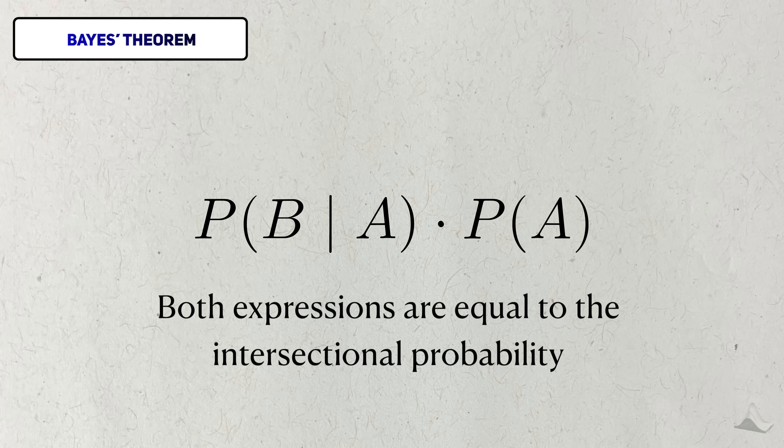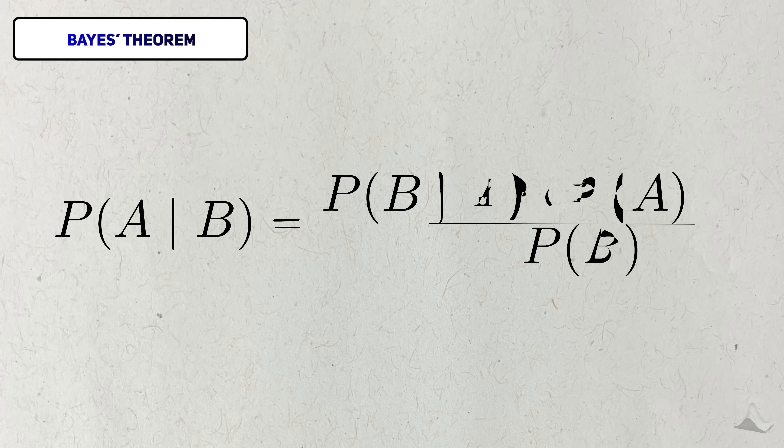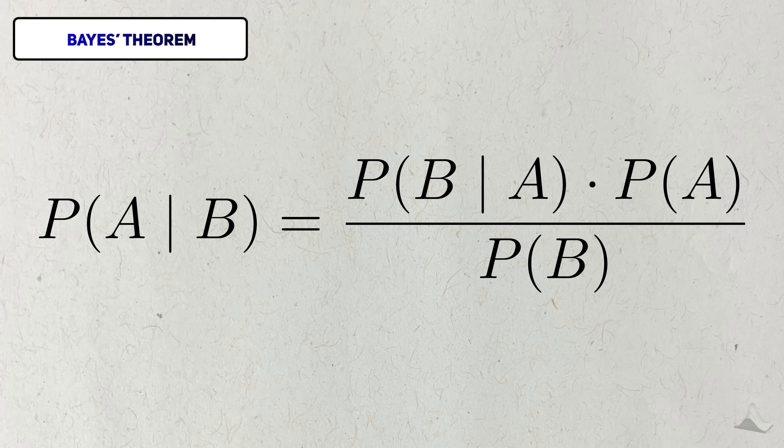But this product can also be expressed the same way with the roles of the events reversed. Since these expressions are equivalent, we can form a relationship that links these two conditional probabilities. Just by moving this marginal probability over, we get Bayes' theorem. That was easy to describe. How should we interpret this relationship?